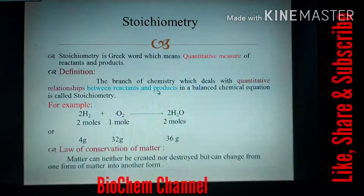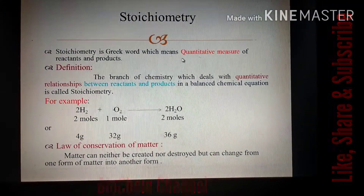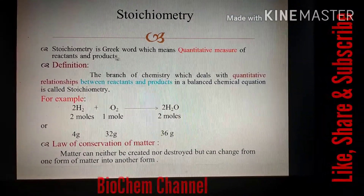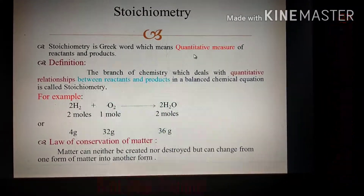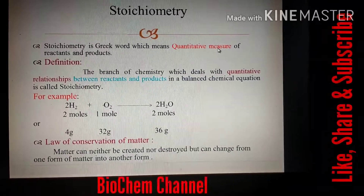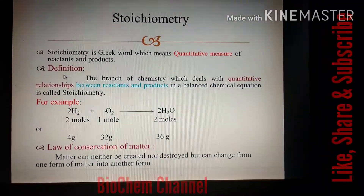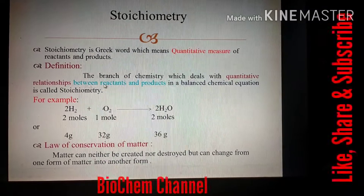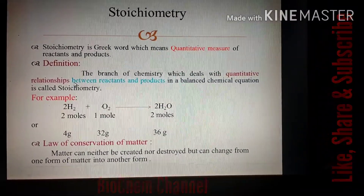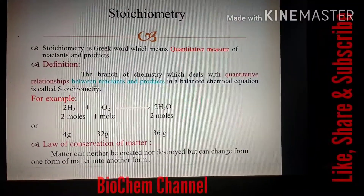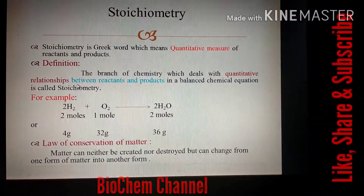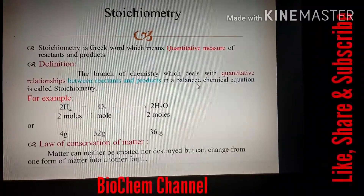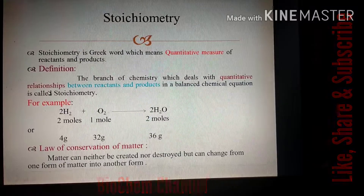Stoichiometry is a Greek word which means quantitative measure of reactants and products. Stoichiometry is a branch of chemistry which deals with the quantitative relationship between reactants and products in a balanced chemical equation.